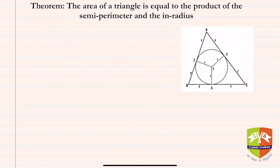Here is another theorem which says that the area of a triangle is equal to the product of the semi-perimeter and the in-radius. I believe you already know what a semi-perimeter and in-radius is, but nevertheless let me explain once again.